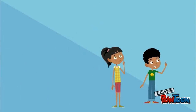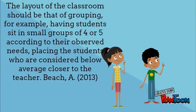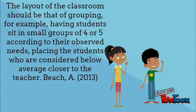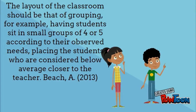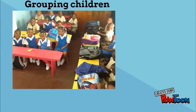In order to resolve this problem, the layout of the classroom should involve grouping — for example, having students in small groups of four or five according to their needs. Children who are considered below average would be seated closer to the teacher to get more attention.